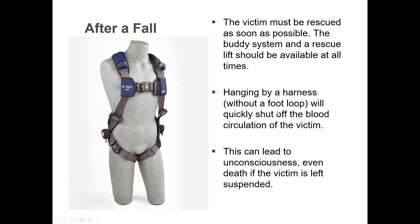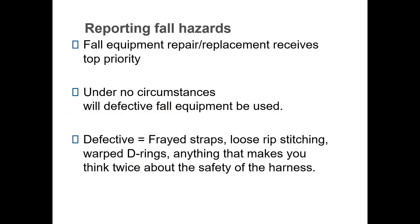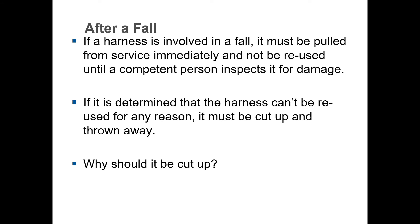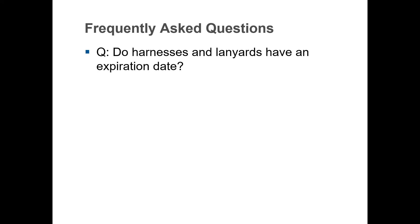Rescue the victim as soon as possible — use the buddy system and have a rescue lift available at all times. Hanging in a harness without a foot loop quickly cuts off blood circulation, leading to unconsciousness and even death if left suspended. Fall equipment repair and replacement receives top priority. Do not use defective fall equipment — frayed straps, exposed rip stitching (which indicates the harness has been in a fall), warped D-rings, or anything that makes you doubt the harness. If a harness has been involved in a fall, pull it from service and cut it up — don't leave it for someone to salvage from the trash.